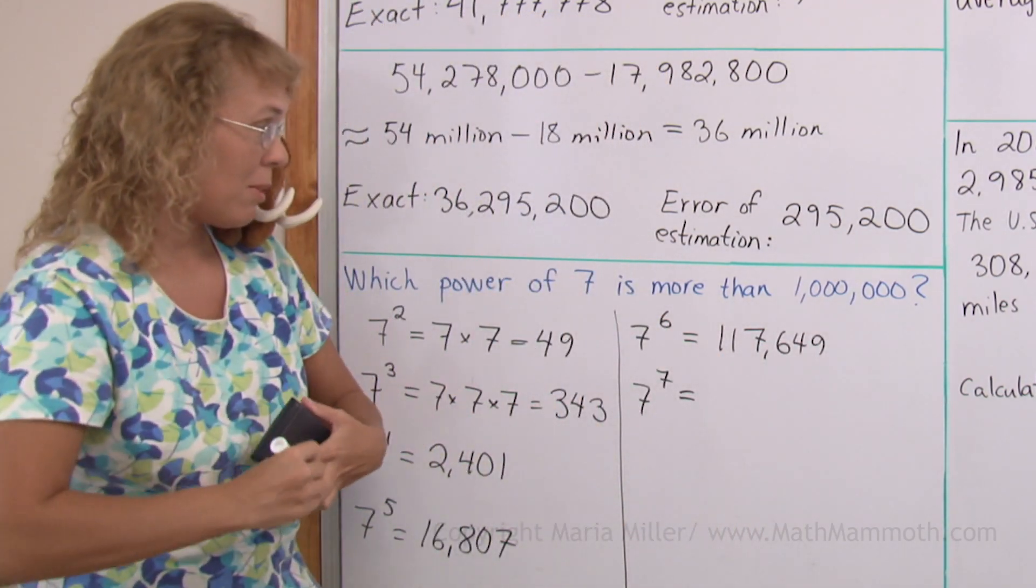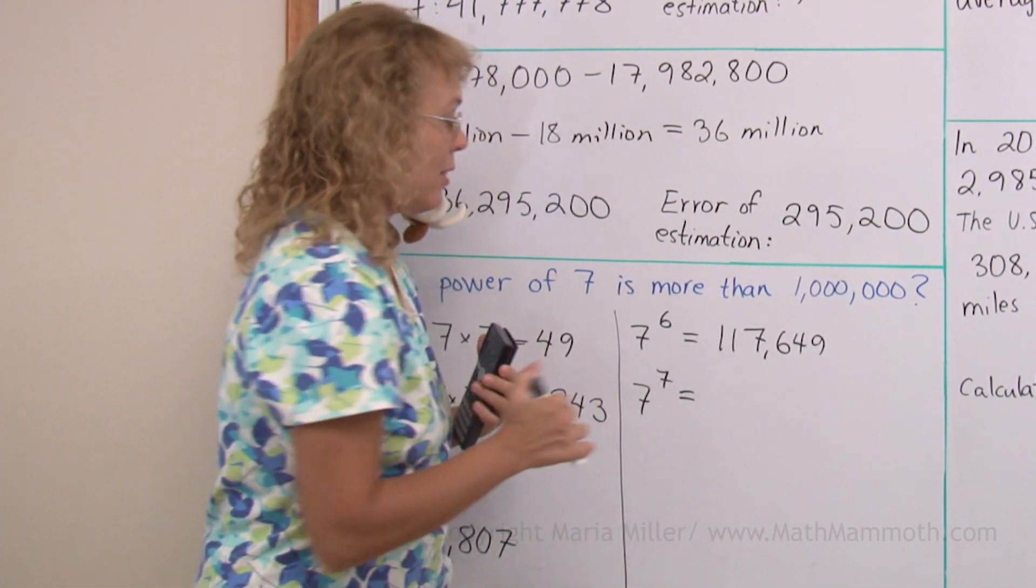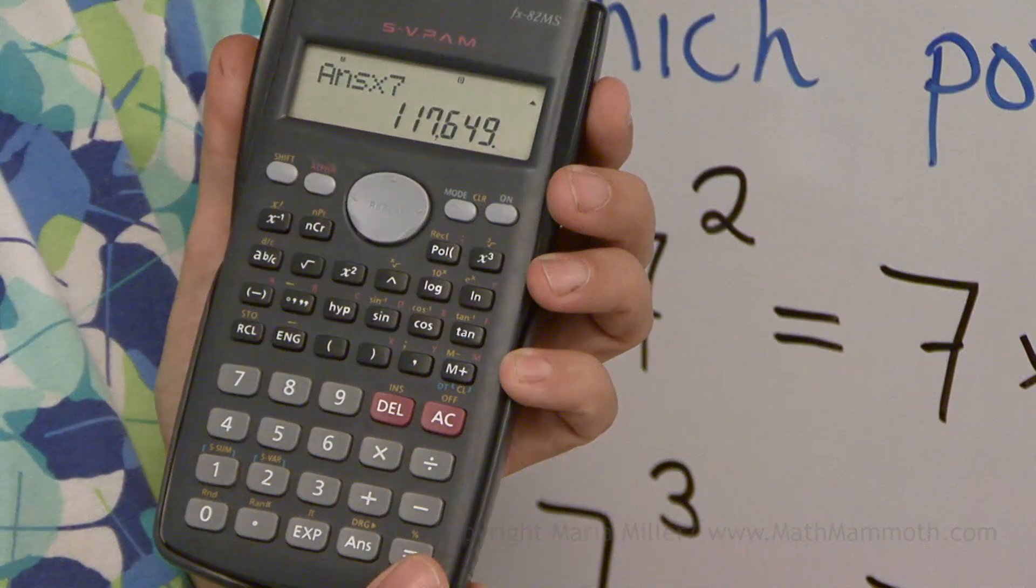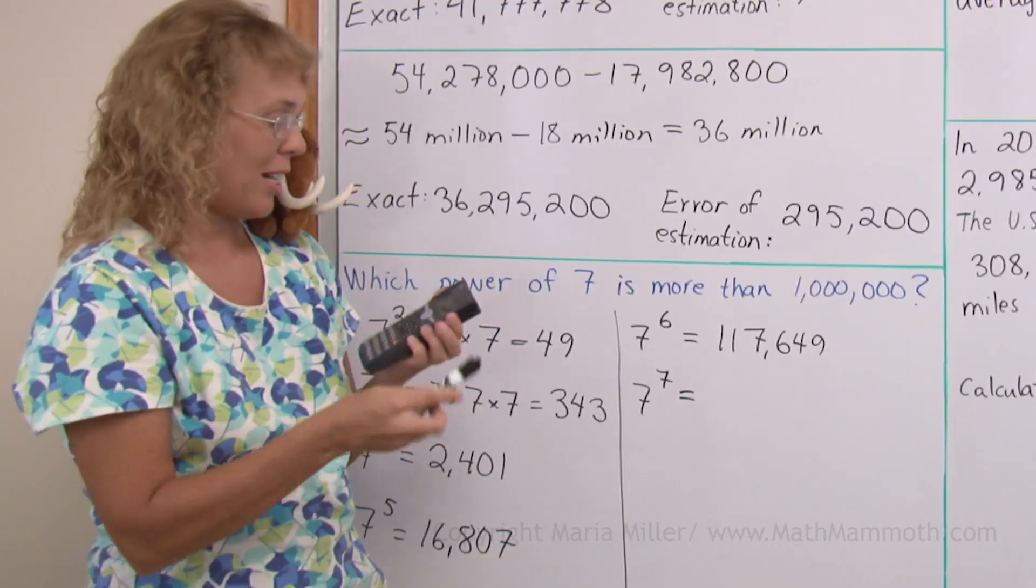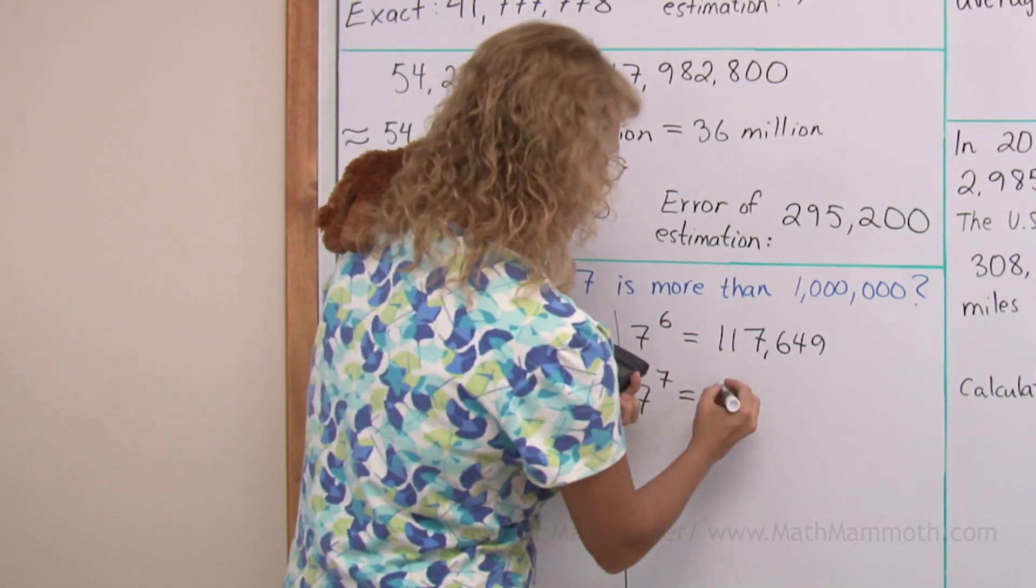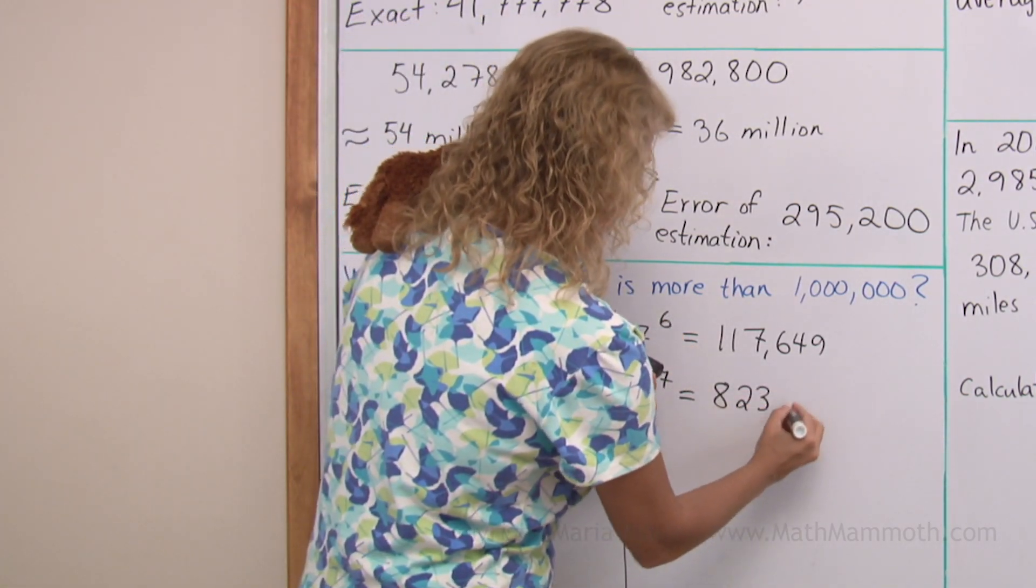This is going to get close now. Maybe taking this times seven will go over 1,000,000. Not quite, but it is 823,543.